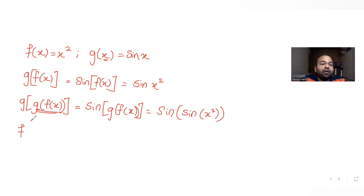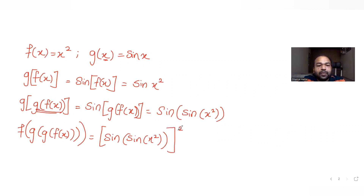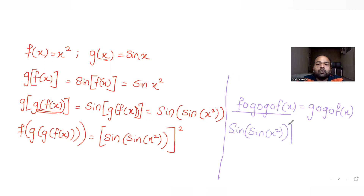For f(g(g(x))), instead of x² in f we write g(g(x)) = sin(sin(x²)), so f(g(g(x))) = (sin(sin(x²)))². Setting f(g(g(x))) = g(g(f(x))) gives us (sin(sin(x²)))² = sin(sin(x²)).